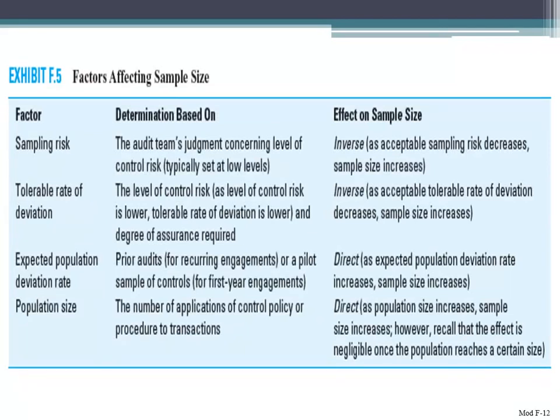Some of the factors affecting sample size would be things like sampling risk, which is based on the audit team's judgment. The risk is usually set low, and it has an inverse effect on the sample size — as sampling risk decreases, sample size increases. So remember: if you want to reduce your sampling risk, you're going to adjust the sample size upward.